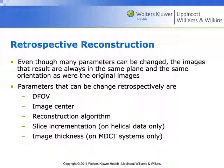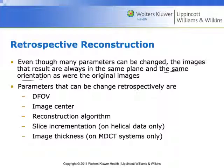With retrospective reconstruction, we can change a whole lot of things about how image data is reconstructed, but we cannot change the orientation. It needs to be exactly the same orientation. For example, if the images were acquired in axial, we will reconstruct into an axial view.